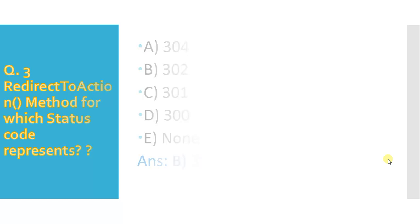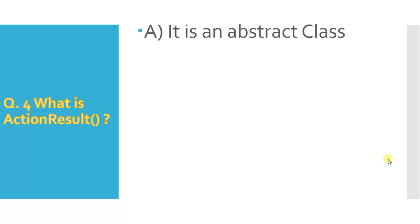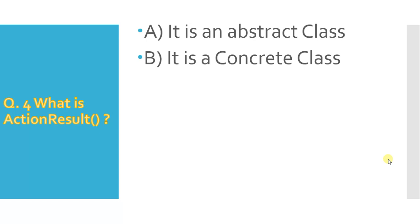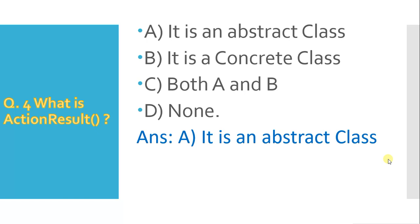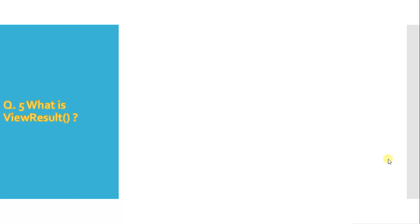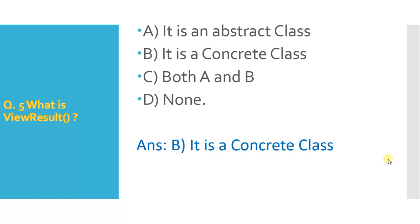RedirectToAction represents 302 status code. Next question: what is ActionResult in MVC? Option A is it is an abstract class, B is it is a concrete class, C is both A and B, D is none. Answer is A — it is an abstract class. Next question: what is ViewResult? Answer is B — it is a concrete class in MVC.